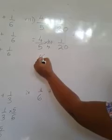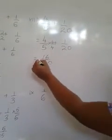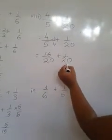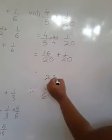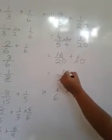4 times 4 is 16. 5 times 4, 20. Added 1 twentieth. Now the denominator same. So our denominator is 20. 16 added 1 is 17.